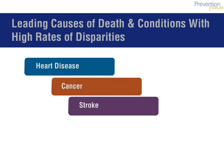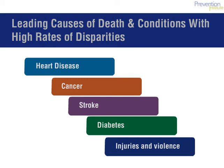Consider this. In the United States, heart disease, cancer, stroke, diabetes, and injuries and violence are the five leading causes of death. There are large racial and ethnic disparities for each of these conditions. In fact, they disproportionately affect specific population groups who experience a higher burden of disease, higher rates of premature death and chronic conditions, and diminished quality of life and productivity.